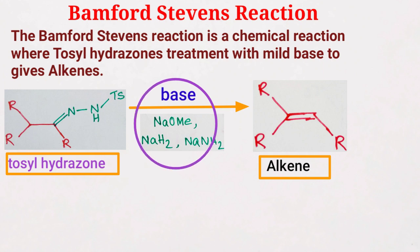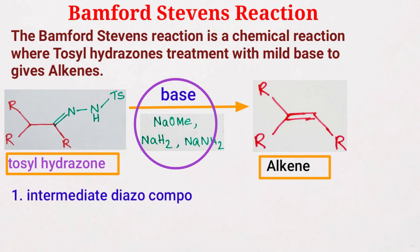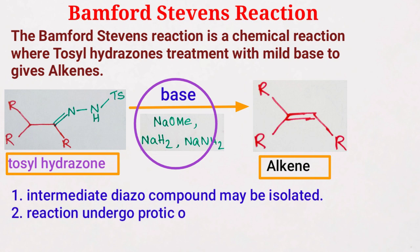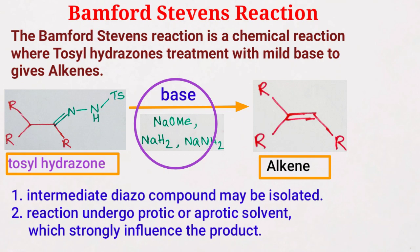Actually, this reaction is performed in two steps, where the intermediate diazo compound may be isolated. That is why the reaction proceeds through either a protic solvent or an aprotic solvent, which strongly influences the outcome of the reaction.